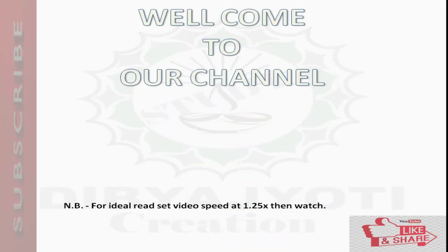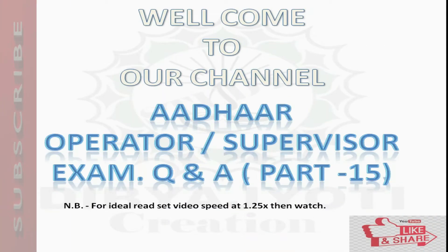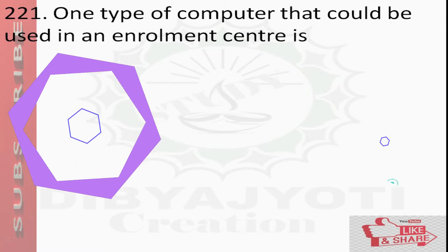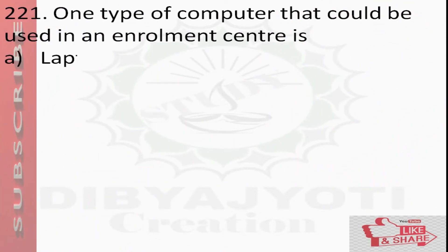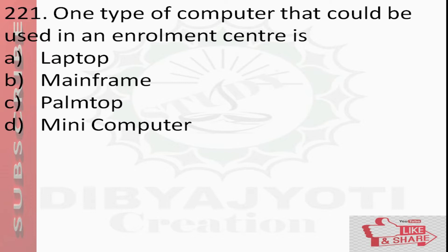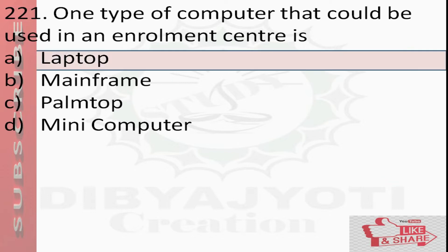Hey guys, welcome to our channel. Aadhaar operator and supervisor exam question and answer, part 15. Question number 221: One type of computer that could be used in an enrollment center. Options are: option A laptop, option B mainframe, option C palm top, option D mini computer. Answer is option A laptop.